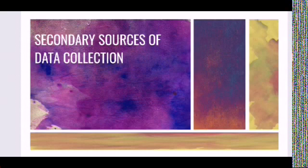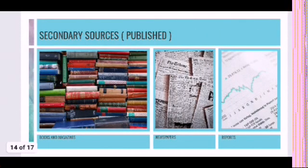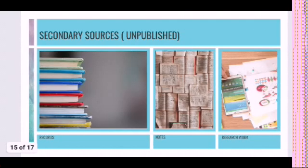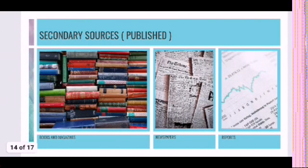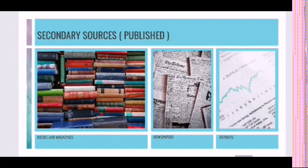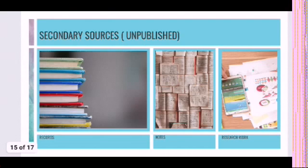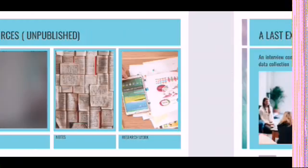Now coming to the second source — secondary source of data collection. Secondary sources are basically divided into published and unpublished sources. Published sources include books, magazines, newspapers, and published reports. Unpublished sources of secondary data include internal records of organizations, personal notes, or research work. Though secondary data is easy to collect, we need to be careful while extracting information from a secondary source.